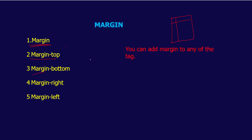When you use margin-left, you get a boundary towards the left side. Margin-right gives a boundary limit towards the right side. Setting margin-bottom gives it for the bottom, and margin-top gives it for the top. You also have the shorthand margin property, which covers all sides — right, left, top, and bottom. Let us see these margin properties in Visual Studio Code.